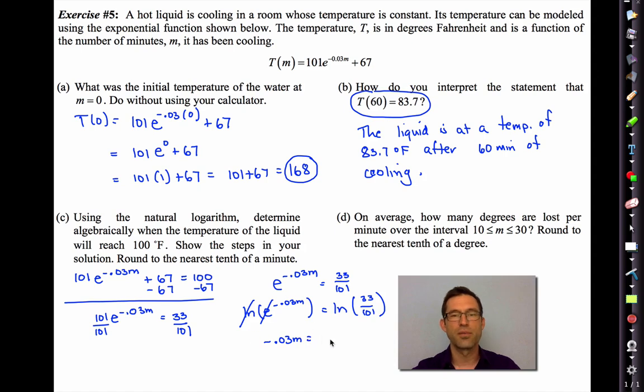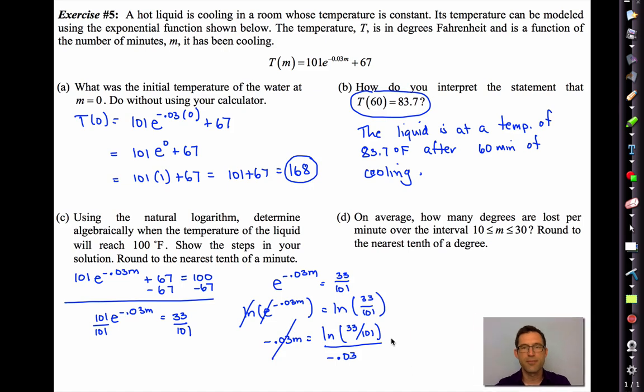We're going to use it for that reason because the natural logarithm and e cancel. They're inverses. What do I have to raise e to to get e to the negative 0.03M? Well, negative 0.03M. It's great because all logarithms then go away except for the one on this side. And now, of course, I can divide both sides by negative 0.03. And this is about 37.3 minutes, which is good because it's less than the 60 minutes that it took for it to reach 83.7.